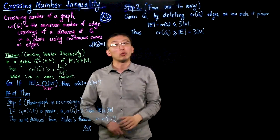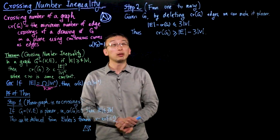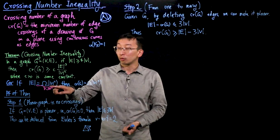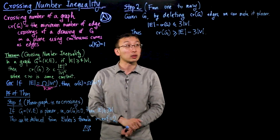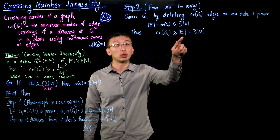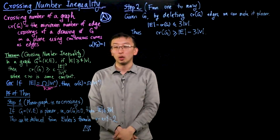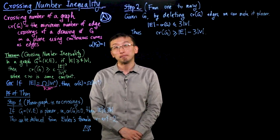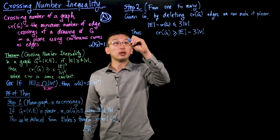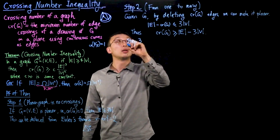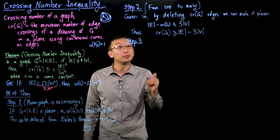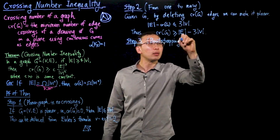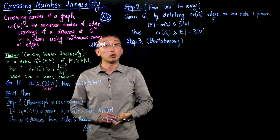Let's pause and examine this bound. It is a valid bound, but it's not that great. For example, when |E| is on the order of |V|², the conclusion we would get at this stage is also quadratic in the number of vertices, which is not as high as we would like — we want the fourth power in the number of vertices. This brings us to the third step, where we'll use the probabilistic method. I'll call this the bootstrapping step, where we go from a weak bound to a much stronger bound by using sampling.